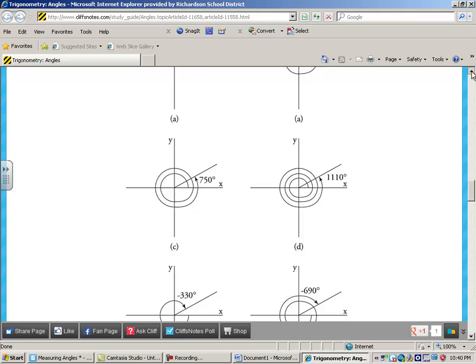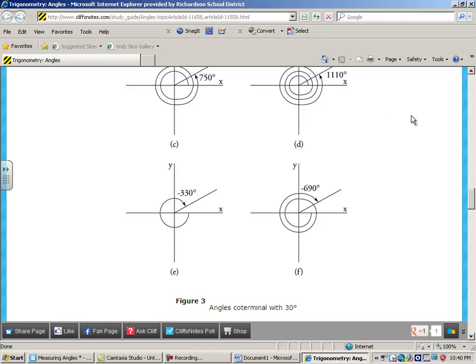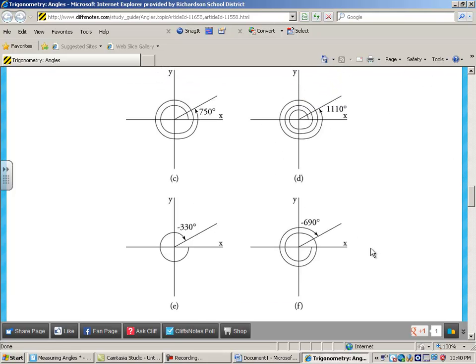You can have coterminal angles and here's several examples. Here's a 30 degree angle and a 390 degree angle. They end up in the same place, but they're called coterminal because they have different names. Here we actually wrapped around an extra 360. And of course, 1110, look at that. That's several rotations around. So there's some examples of coterminal angles. And you can go to this website if you need to.